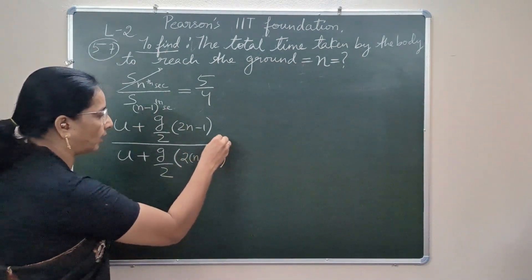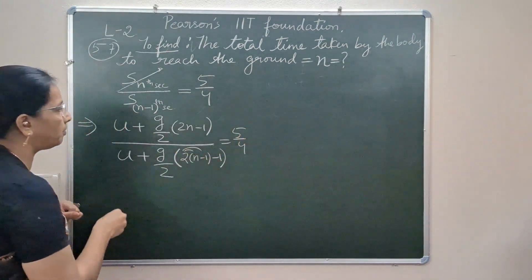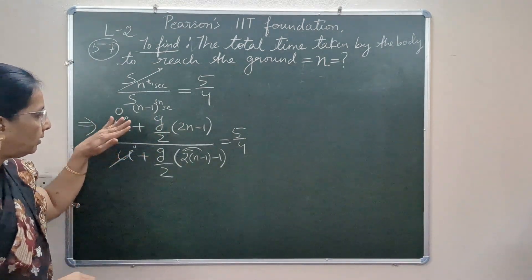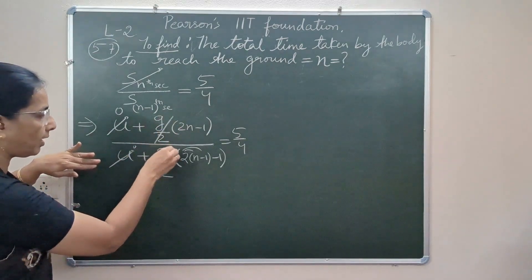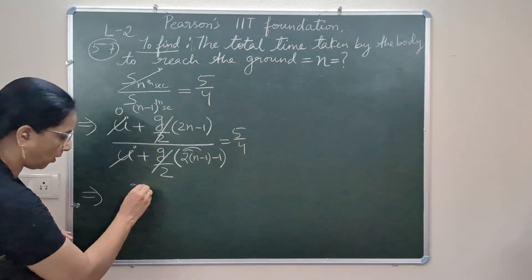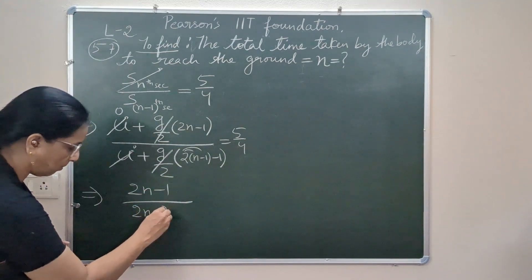On the other side we have 5 by 4. Here we go for distribution. Since our bodies are dropped, the u turns 0, and once these two terms are not there, g by 2 terms also cancel. Now in the left side we have twice n minus 1, and this one is twice n minus 2 minus 1, which is 5 by 4. And ultimately we'll do a simple cross multiplication of terms after assembling this.